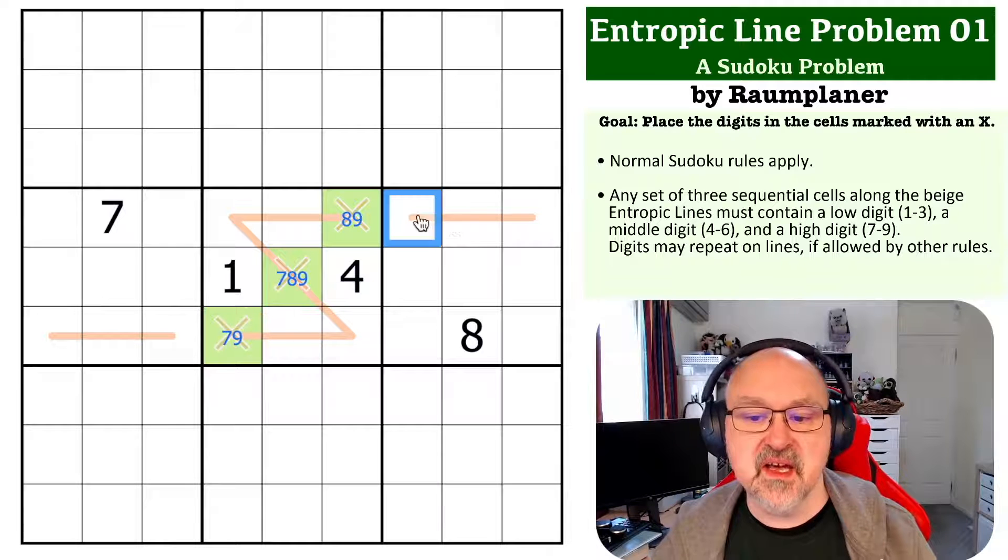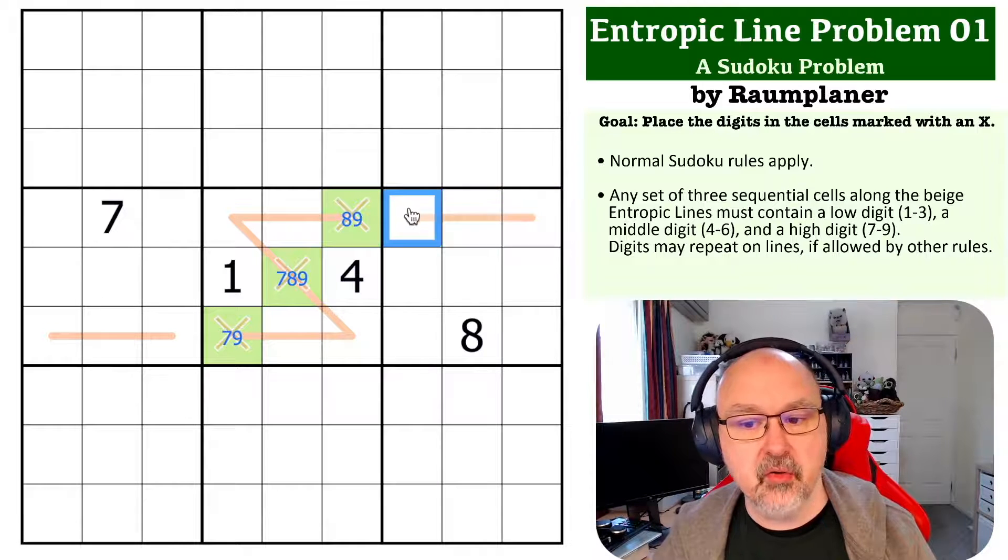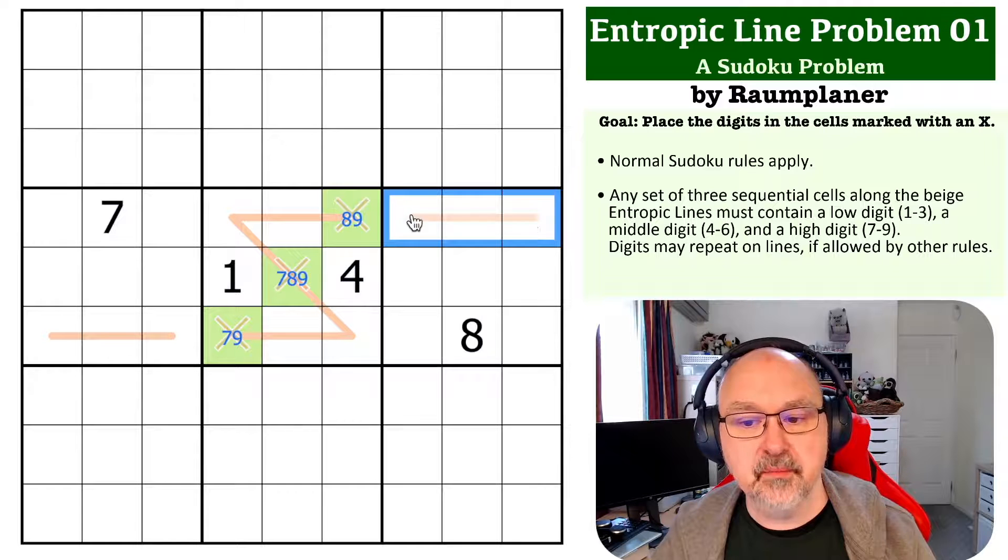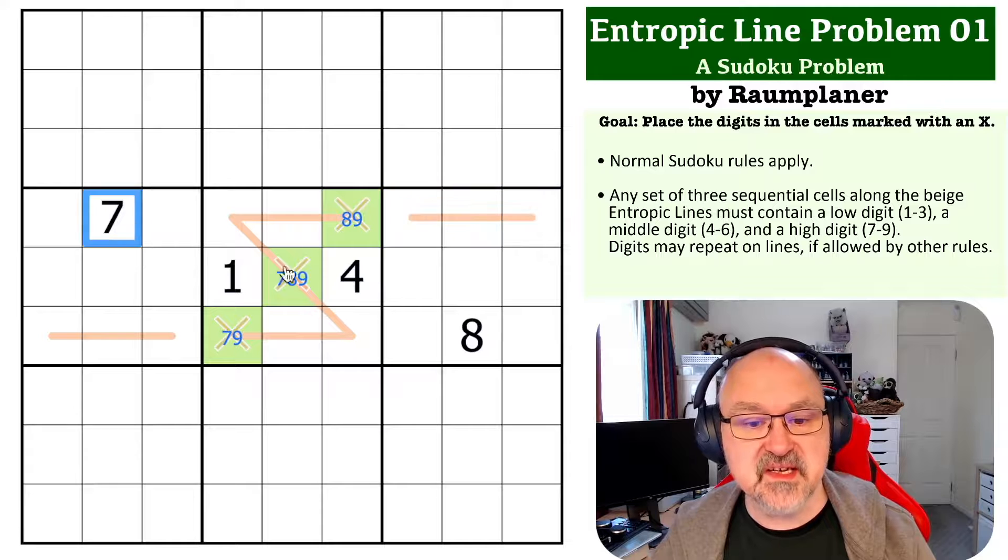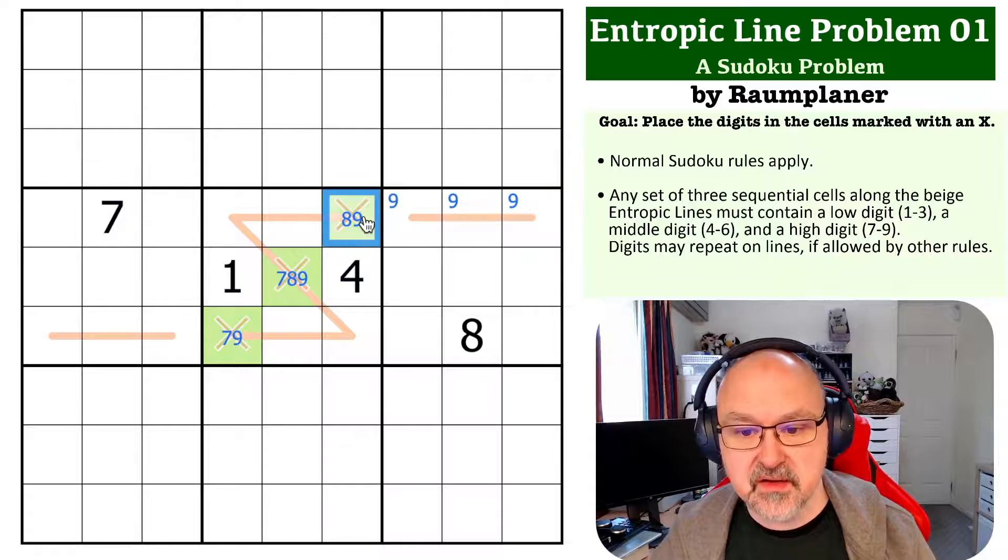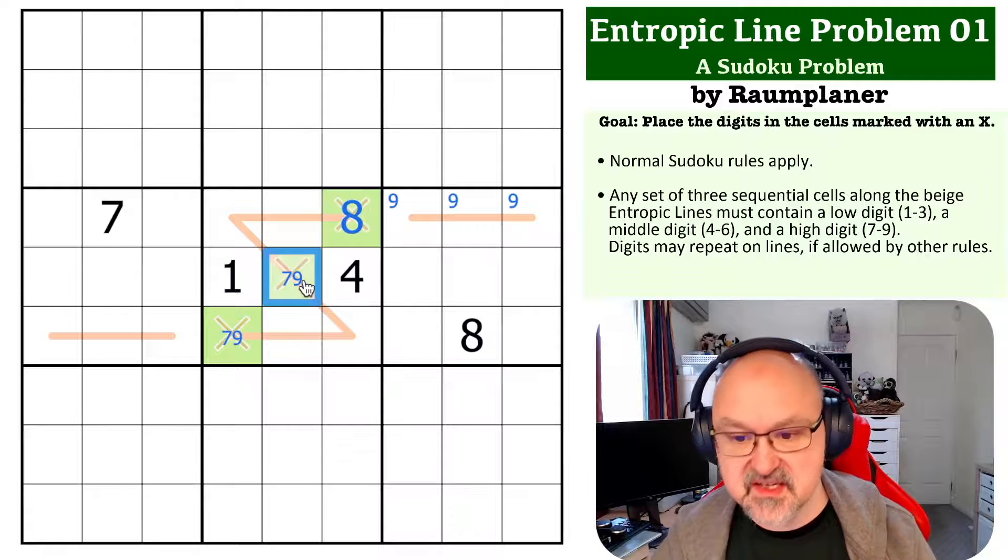But what does is we have to put a high digit on this line. And it's this entire line, because you must put a low, a mid, and a high on a run of three. And this line sees a 7 and an 8. So there must be a 9 on this line. So this becomes the 8, and this isn't the 8.